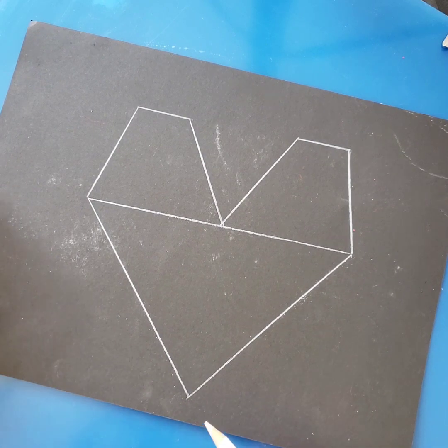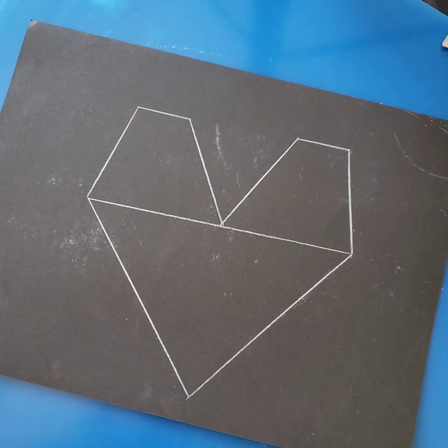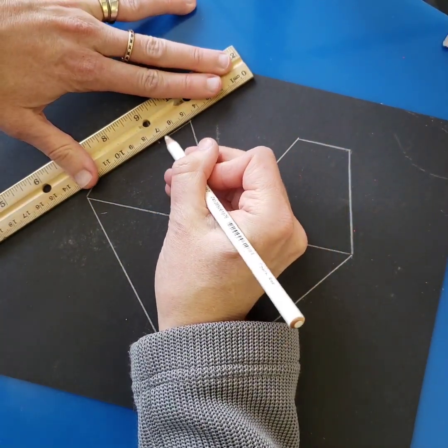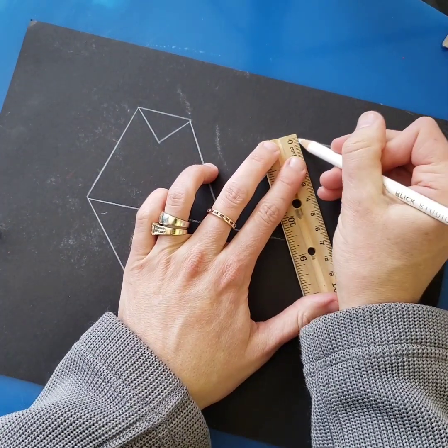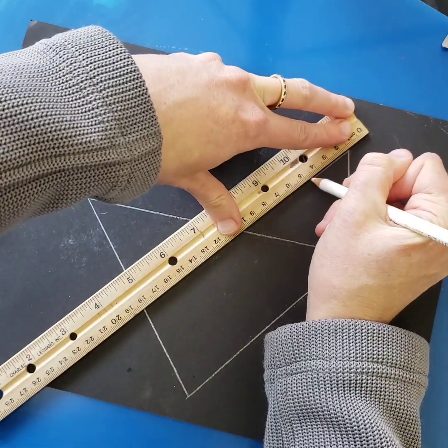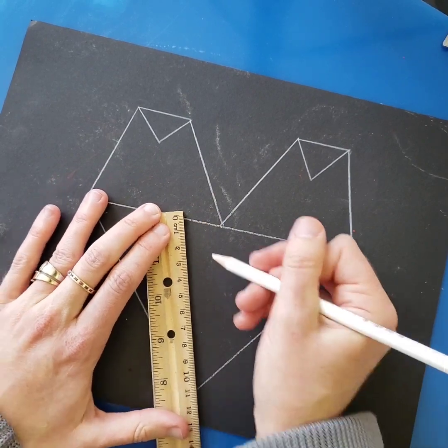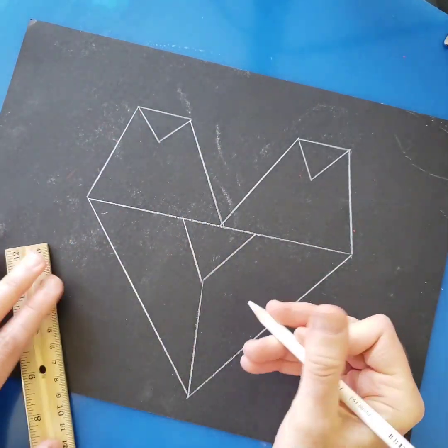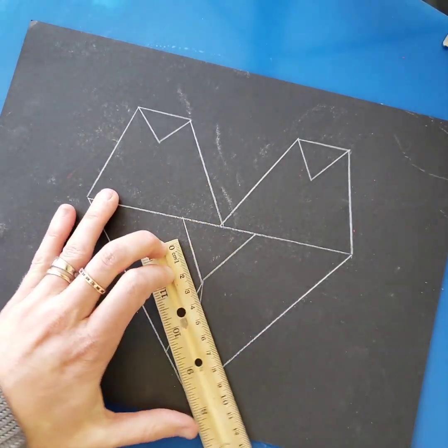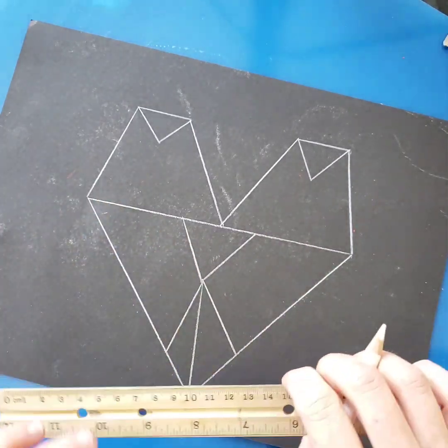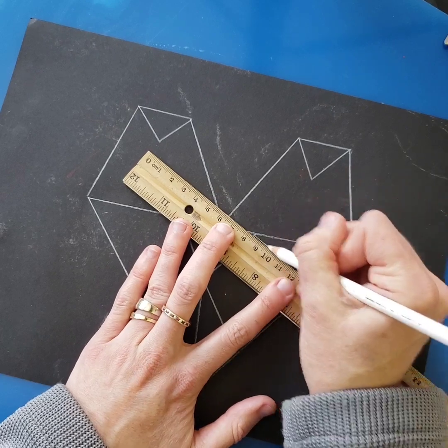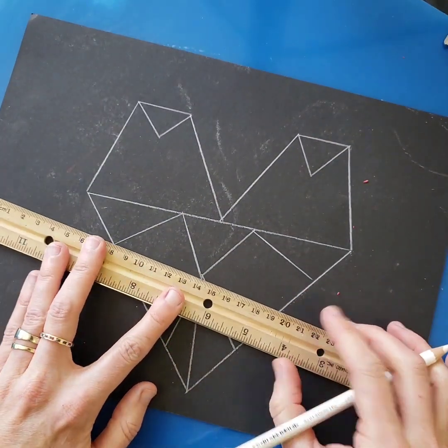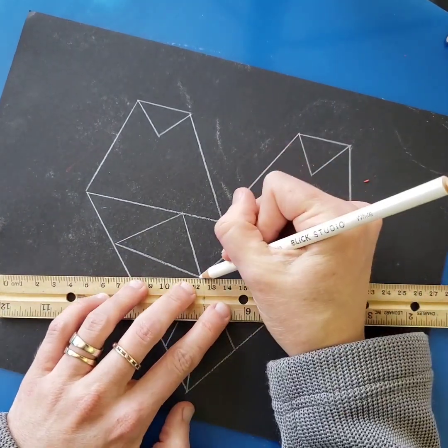The next thing that we're going to do is we're going to draw a few more straight lines in here to make it look a little bit more like a gemstone. I'm going to make sure that this has bilateral symmetry and whatever I do on the left hand side, I'm going to do on the right hand side as well. There's no real right or wrong way to do this. We're basically just creating a triangular pattern within our heart.